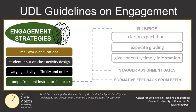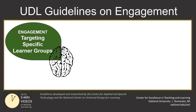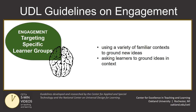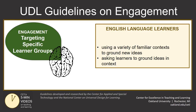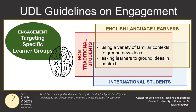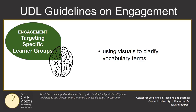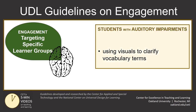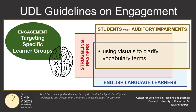These are some ways to consider multiple means of engagement that may help all learners in your classroom. Some of these may sound familiar, as many of them are simply good pedagogical strategies. If you're looking to target specific learner groups in your discipline, it's helpful to first identify who they are and what they need in terms of engagement. For example, using a variety of familiar contexts to ground new ideas, or asking learners themselves to ground these ideas in context, can help English language learners, international students, and non-traditional students make sense of disciplinary ideas. Using visuals to clarify vocabulary terms can also help engage students with auditory impairments, English language learners, or struggling readers.